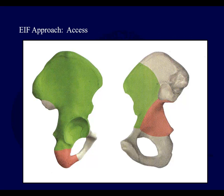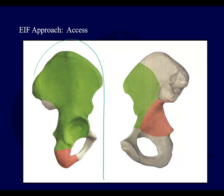The majority of it is an external approach. The classic Latournel surgical incision follows an upside-down J or candy cane shape. When you reflect everything, you get wide exposure of the external part of the pelvis or the outer table. You can also elevate the abdominal muscles off and get some exposure down anteriorly as well, and if you have to, some digital exposure there too.